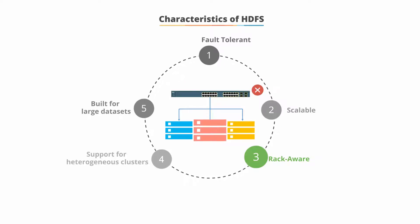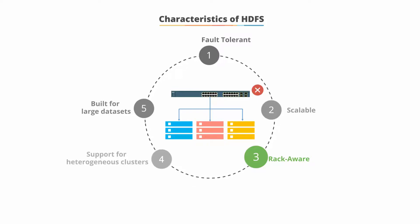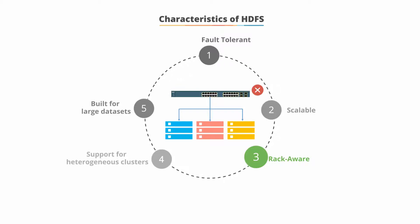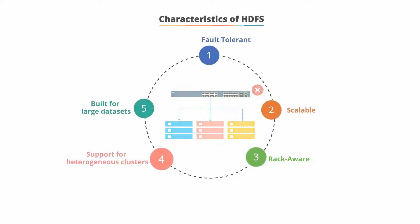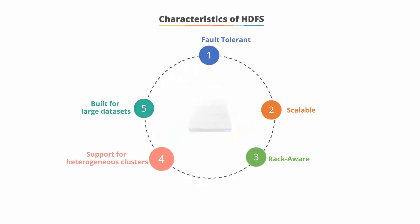Communication between two data nodes on the same rack is more efficient than between two nodes on different racks. Information about the location of each data node distributed across the racks in the Hadoop cluster is stored in the name node. We'll be learning more about the name node, which holds our metadata, when we discuss the HDFS architecture.